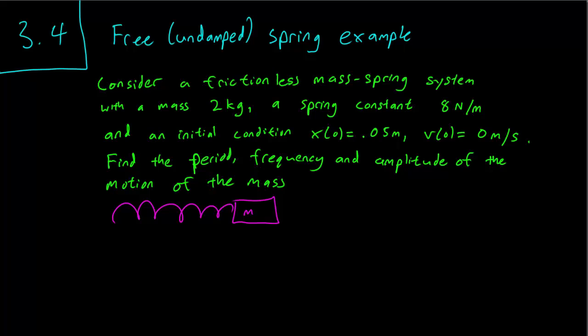So we consider a mass spring system with a mass 2 kg and a spring constant 8 N/m. And by the way, when you see the word frictionless here, it should clue you in that there is no damping constant.